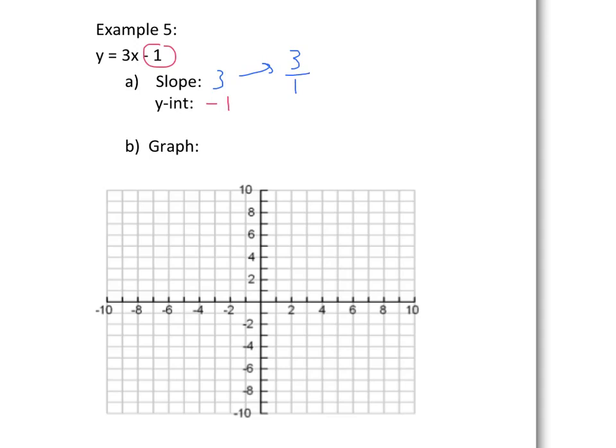So our y-intercept is negative 1. Our slope is 3 over 1, so I will go up 3 from the y-intercept and to the right 1. And that is our next point on our line. So we use those two points to graph our line. And that is using the slope-intercept equation or form to graph a line using slope and intercept. Very useful and very quick.